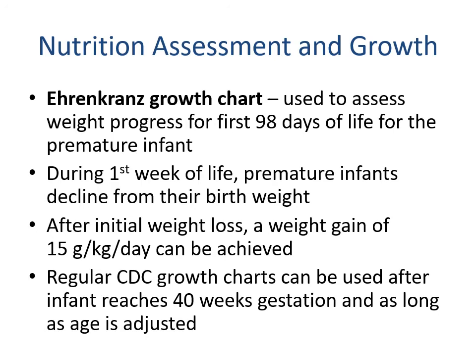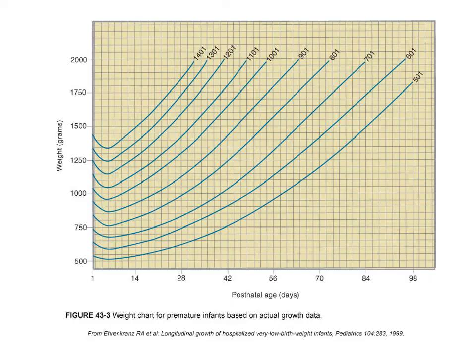The Ehrenkranz growth chart is used to assess weight progress for the first 98 days of life for premature infants. During the first week of life, premature infants decline from their birth weight. After initial weight loss, a weight gain of 15 grams per kilogram per day can be achieved. Regular CDC growth charts can be used after the infant reaches 40 weeks gestation, as long as we use age adjustment.